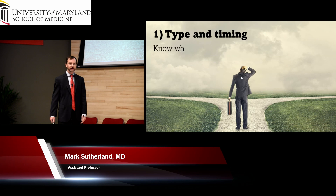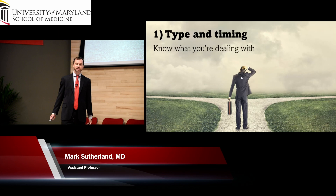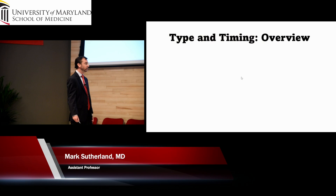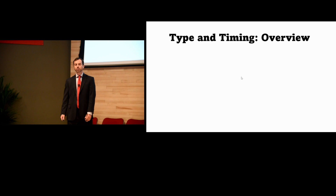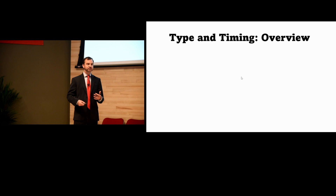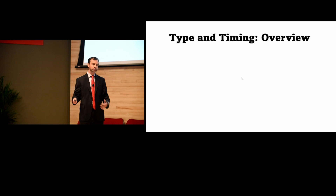Tip number one has to do with type and timing — figure out what you're dealing with. The first fork in the road is chronicity and acuity. Most of the time in the ED and ICU, you'll see a chronic liver failure patient who decompensates — maybe they get septic. We commonly see hepatitis C and alcohol cirrhosis in both the emergency department and the ICU.